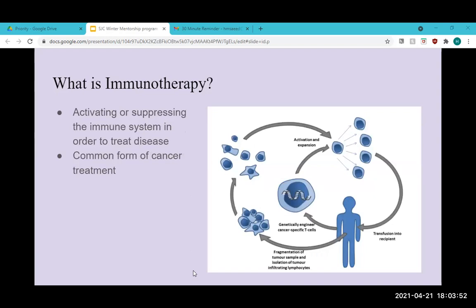And so what exactly is immunotherapy? It's commonly used as a form of cancer treatment. Immunotherapy utilizes our body's own immune system in order to treat a disease. This is done by genetically engineering specific cells that can either activate or suppress an immune response.